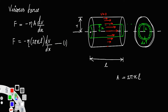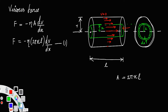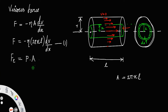There is also an external force acting due to the pressure of the liquid. The external force Fe = pressure × area = P·πx², since the radius is x. Let us call this equation 2.